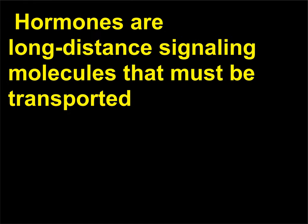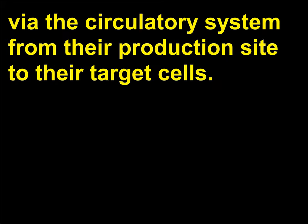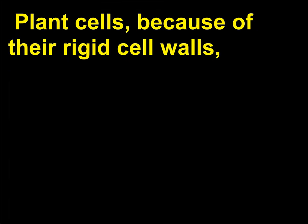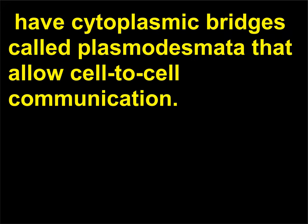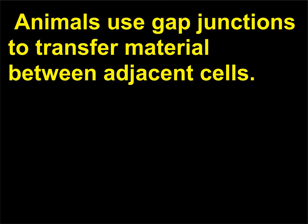Hormones are long-distance signaling molecules that must be transported via the circulatory system from their production site to their target cells. Plant cells, because of their rigid cell walls, have cytoplasmic bridges called plasmodesmata that allow cell-to-cell communication. Animals use gap junctions to transfer material between adjacent cells.